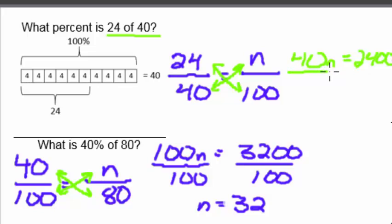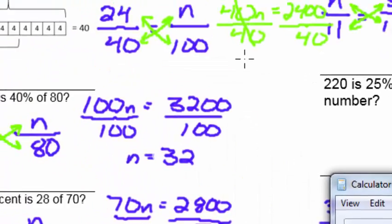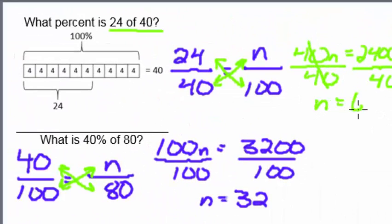We can solve the rest of it. Take both sides divided by 40, which cancels this 40. 2400 divided by 40. If you need a calculator, we get n equaling 60.